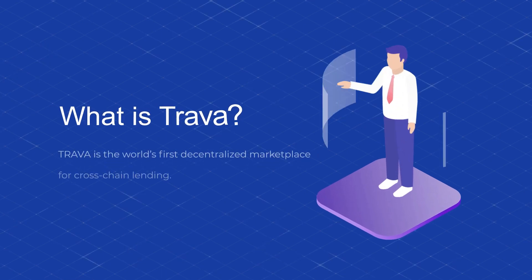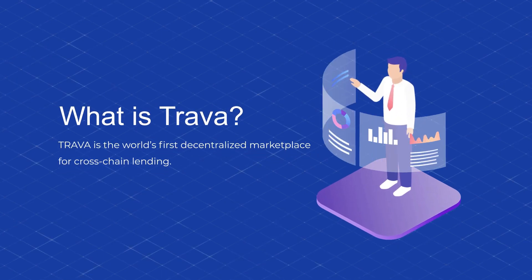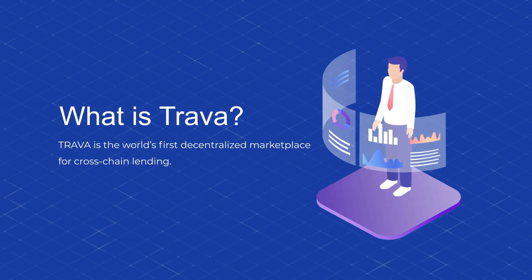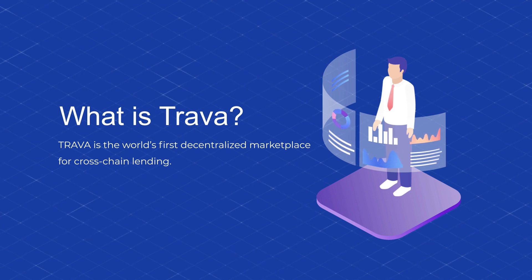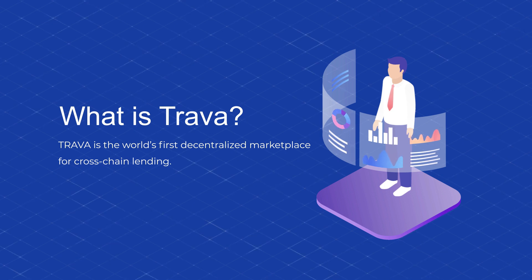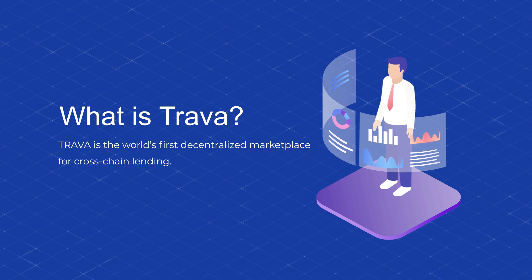Trava is the world's first decentralized marketplace for cross-chain lending. Trava offers a flexible mechanism in which users can create and manage their own lending pools to start a lending business. Trava performs blockchain data analysis to optimize pool parameters, calculate credit score, and thus increases profit and decreases risks for all users.